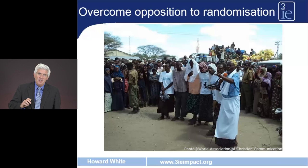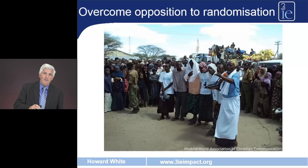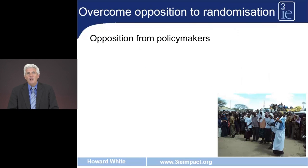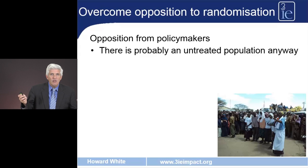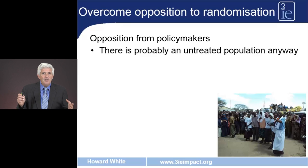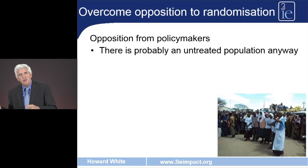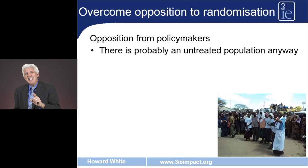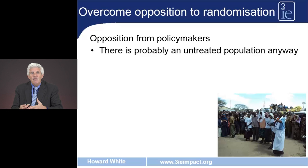There can be opposition to the intervention and, of course, there's often opposition to randomisation — from the top, from politicians, from programme staff, and maybe also intended beneficiaries or those in the control group who want to know why they're not getting the programme now. To politicians, we can point out that we're not creating the fact that there's an untreated population by having a control group. For new programmes, there will be an untreated population. Very few programmes are universal from day one — they're either rolled out over time or they operate in certain regions. So a randomised controlled trial exploits that fact of an untreated population to get a control group. It doesn't create it.